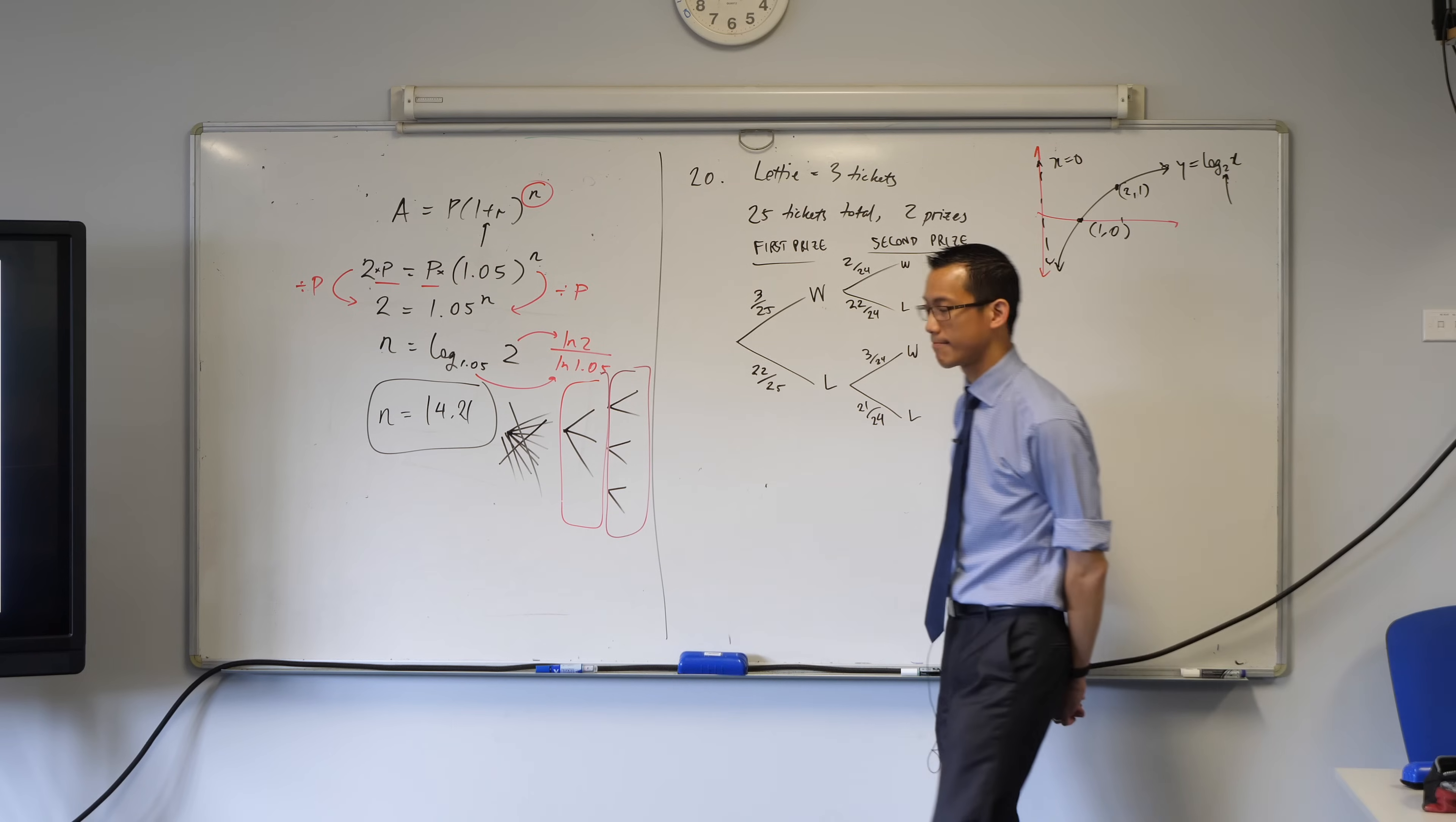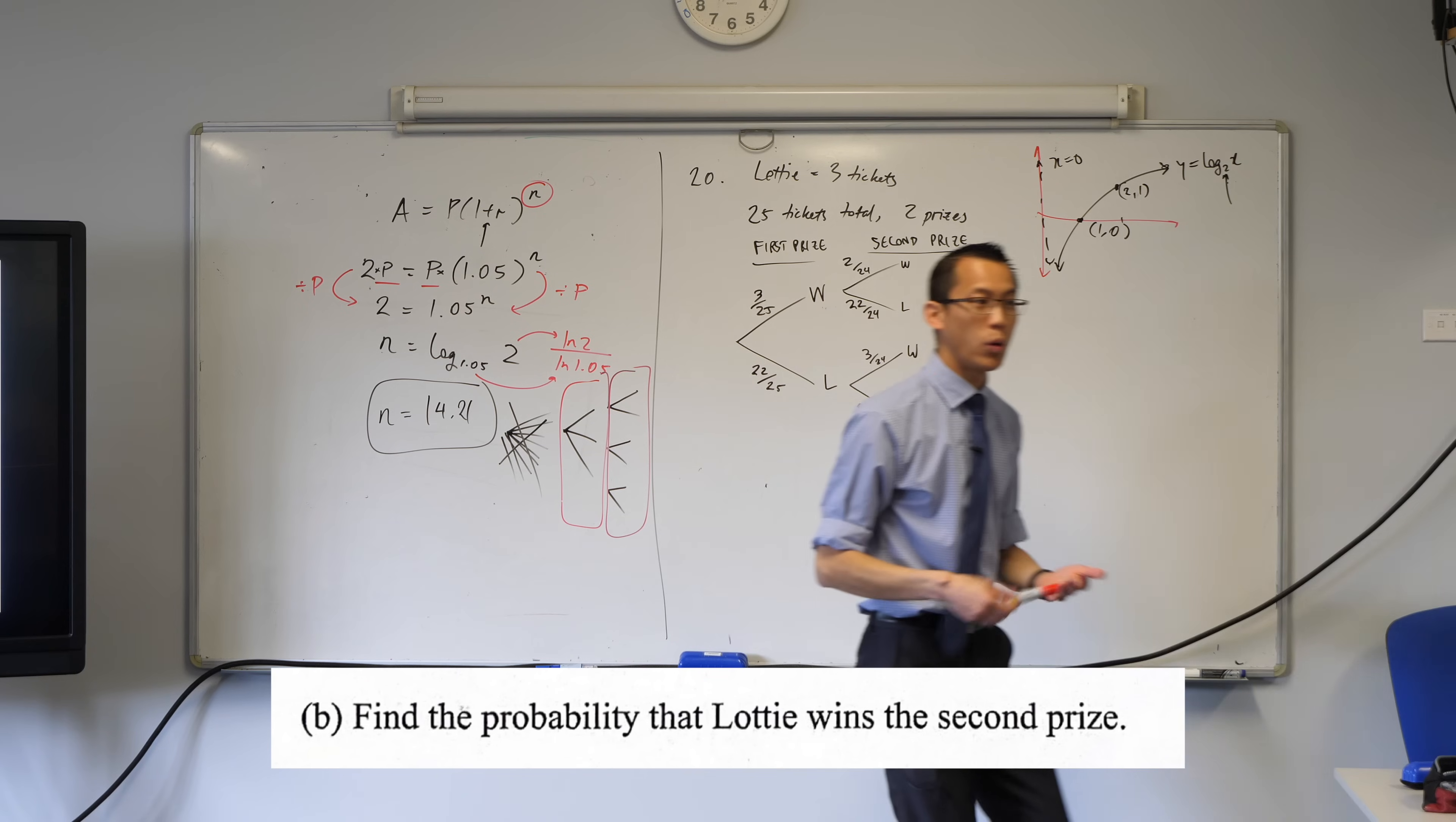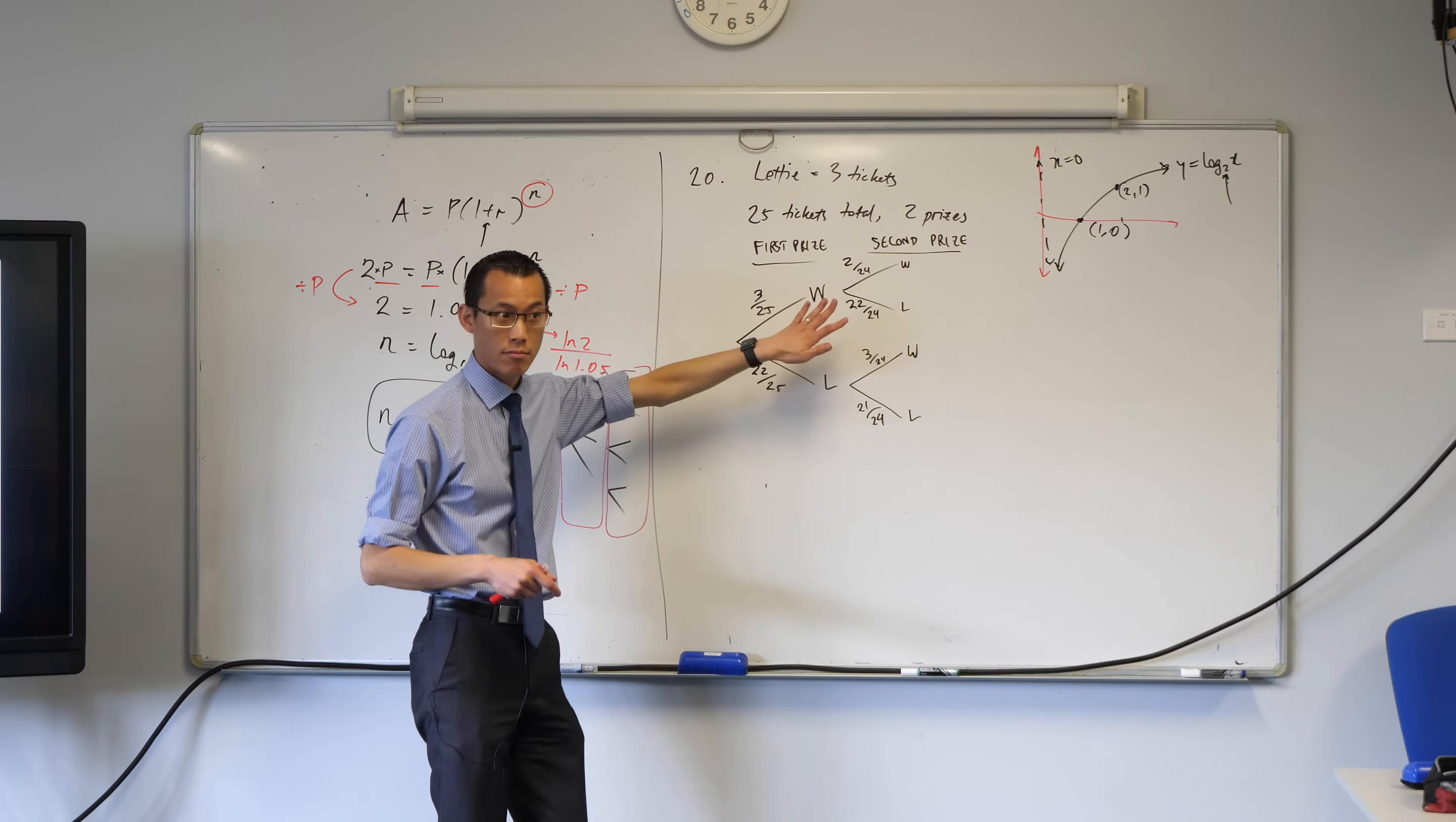So, then, part B is probability of Lottie winning the second prize. So, where do I get this number from? And it's true, the answer itself doesn't tell you very much, right? The question says, find the probability that Lottie wins the second prize. So, do I care what happens to the first prize? No. No, I do not, right? So, therefore, I can consider both of these branches. Either of them are fine, right?